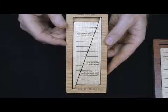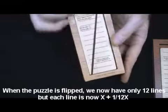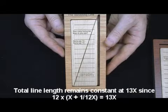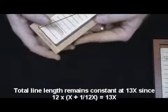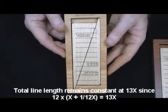These 12 lines are 1 and 1/12 longer than the 13 lines that we see here. Okay? So we end up with the same line length, but a different number of lines because these lines are longer.